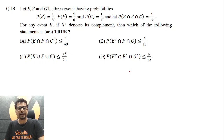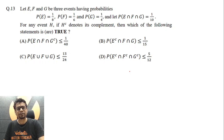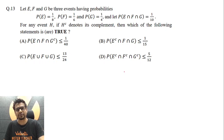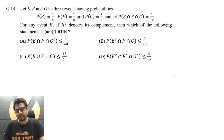For any event H, H superscript C denotes its complement — essentially the non-occurrence of event H. Then which of the following statements is or are true? There are four options. It is a multiple choice, multiple correct type question.